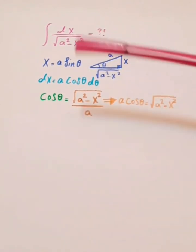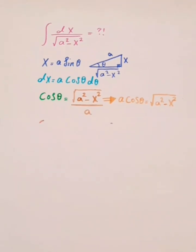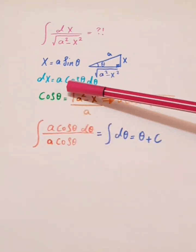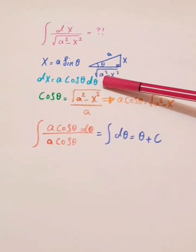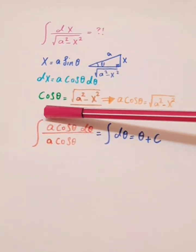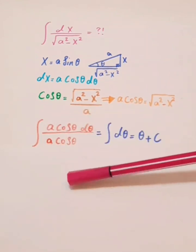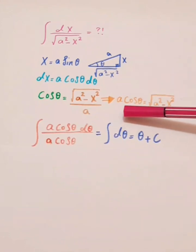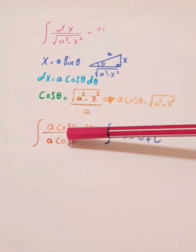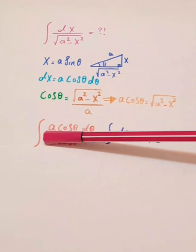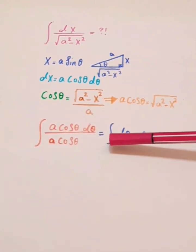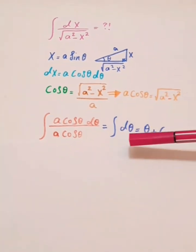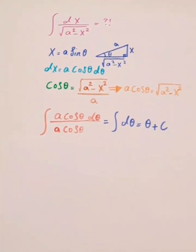Now let's substitute into the integral. We replace dx with a·cos(θ)dθ in the numerator, and replace √(a² - x²) with a·cos(θ) in the denominator. These cancel each other, leaving just the integral of dθ, which equals θ + C.